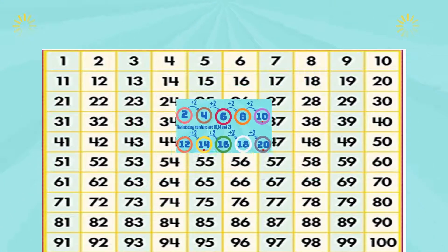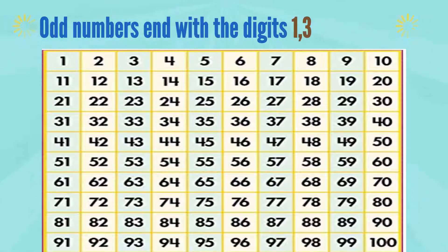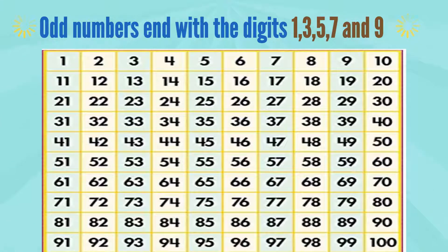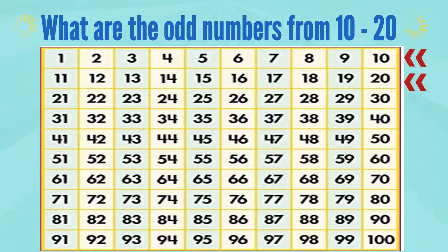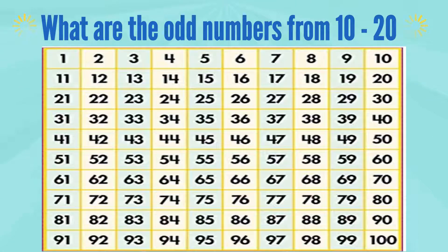This is a number chart. Remember that all odd numbers end with the digits 1, 3, 5, 7, and 9. What are the odd numbers from 10 to 20? 11, 13, 15, 17, and 19.